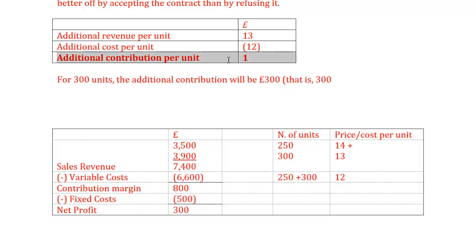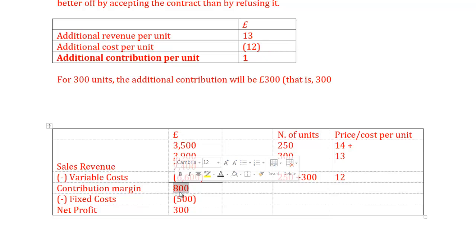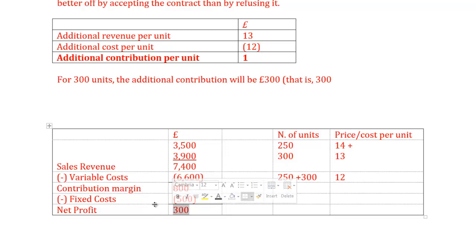So yes, every unit I sell to that customer adds £1 to my profit. The contribution margin increased by £300, used to cover fixed cost. Fixed cost remains £500 — no change, it's irrelevant. So the net profit will be £300. That concludes the first decision.